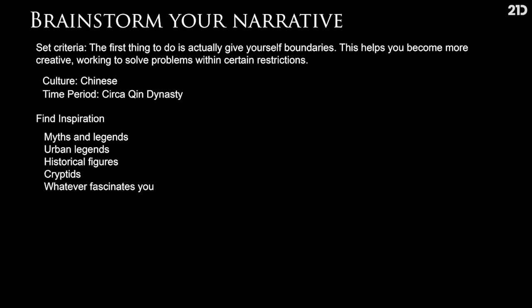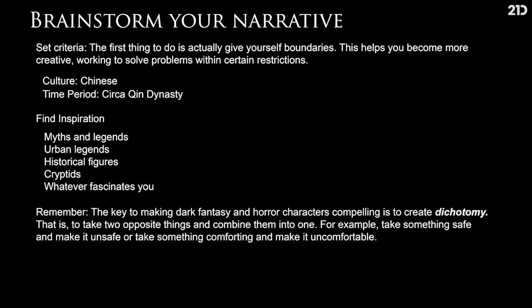The key thing to remember for a dark fantasy and horror character, which is the namesake of this course, is to create dichotomy — to take two opposite things and combine them into one. For example, to take something safe and make it unsafe, like an adorable cat with a tail that's made of nails or has spikes growing out of it. Or to take something comforting and make it uncomfortable, like taking your childhood favorite blanket or teddy bear and turning it into a creature that wants to devour you.